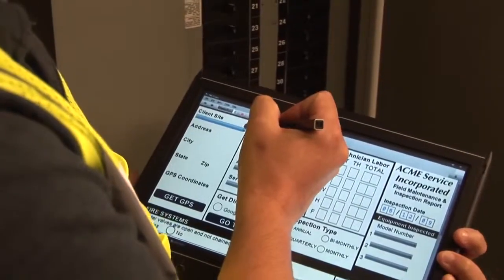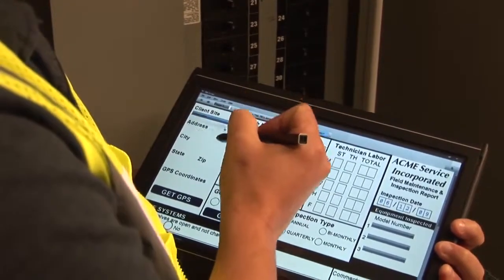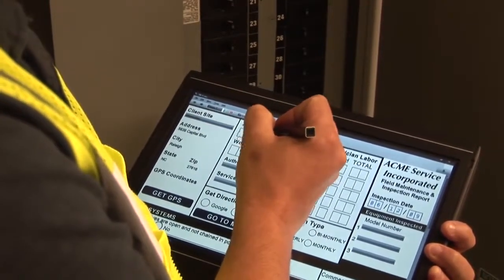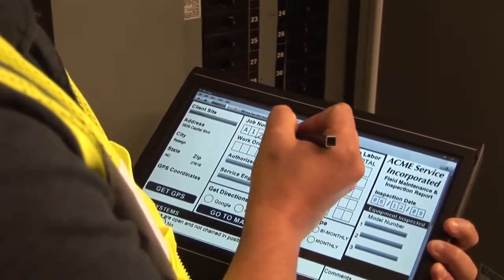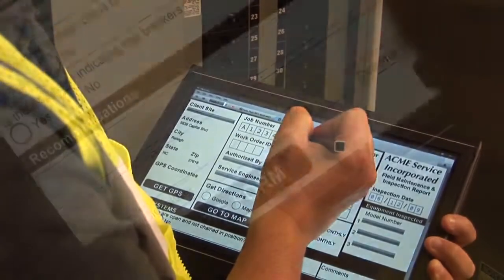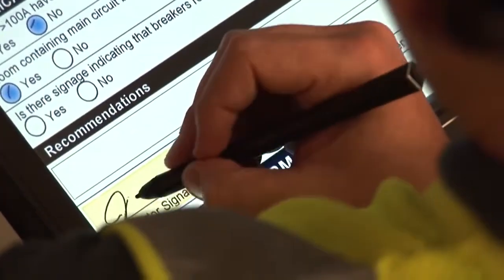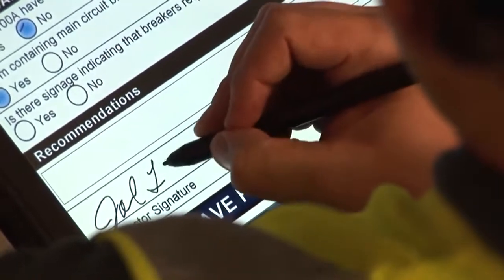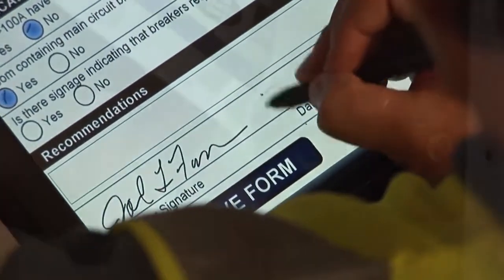Inspectors have instant access to industry-specific forms. They can select common answers from drop-down menus or enter alphanumeric data in the appropriate fields using handwriting recognition. It applies your business rules as the inspector works, saving time and checking for mistakes or missing data.